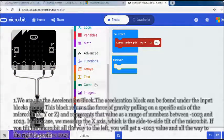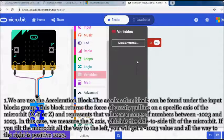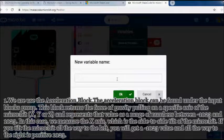At first, we use the acceleration block. The acceleration block can be found under the input blocks group. This block returns the force of gravity pulling on a specific axis of the micro:bit—x, y, or z—and represents that value as a range of numbers between minus 1023 and 1023.